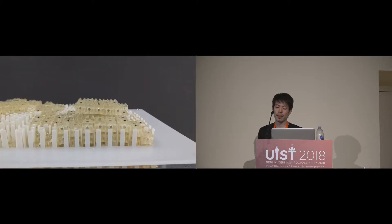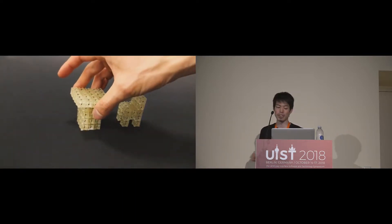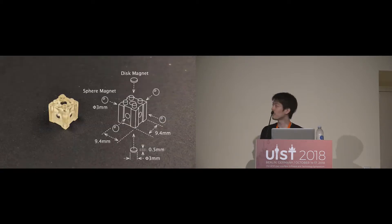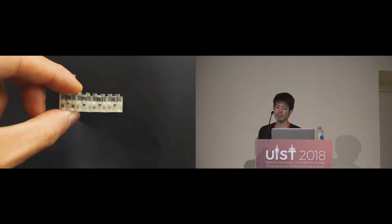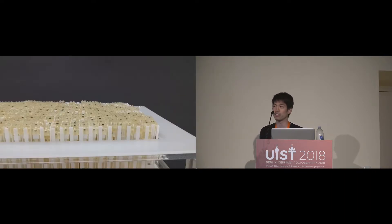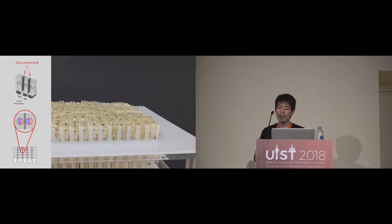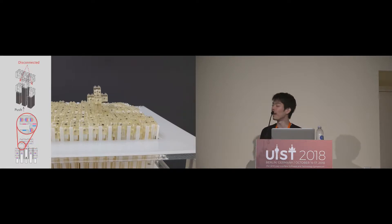DynaBlock combines the capability of the 3D printer and shape displays, assembling 3,000 small block materials to create graspable 3D shapes. Each block is 9mm in size and can connect to others with magnetic connection. To instantly create 3D shapes, it uses the shape display as a parallel block assembler. By combining horizontal and vertical connection and disconnection mechanisms, it can create arbitrary 3D shapes, even with overhanging structures.